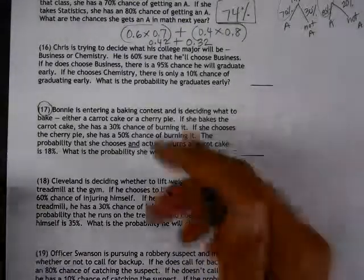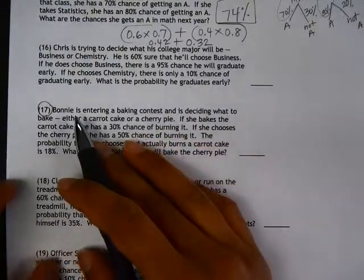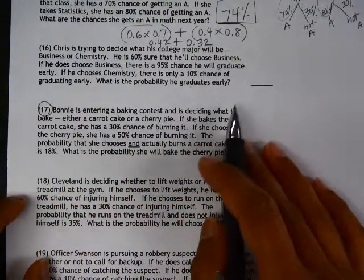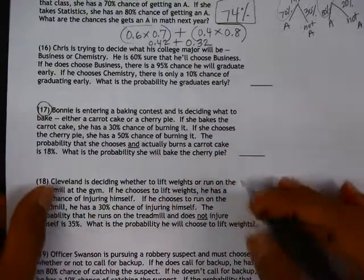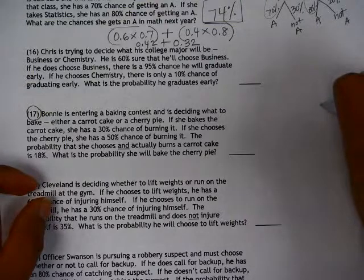This is 24.2, problem number 17. We have Bonnie who's entering a baking contest and she's deciding what to bake. Either a carrot cake or a cherry pie.